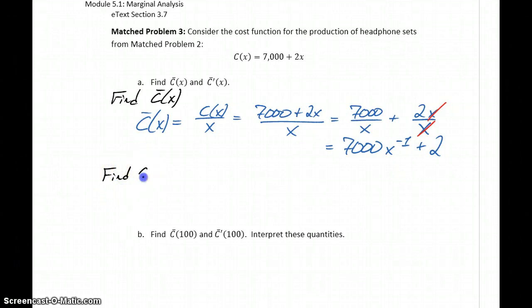Now we want to find our marginal average cost function which is just the derivative of that average cost function. So this is going to give us negative 7,000 x to the negative 2.